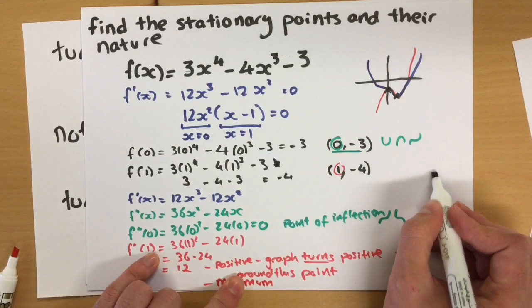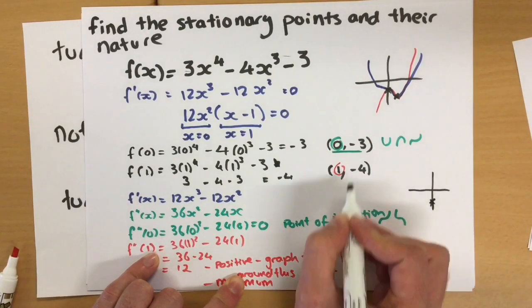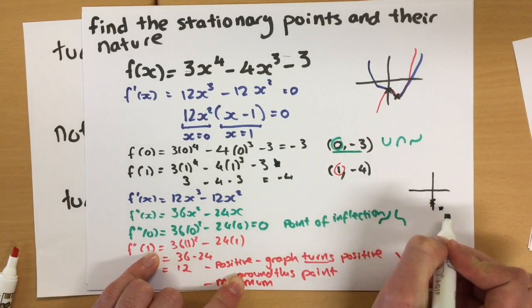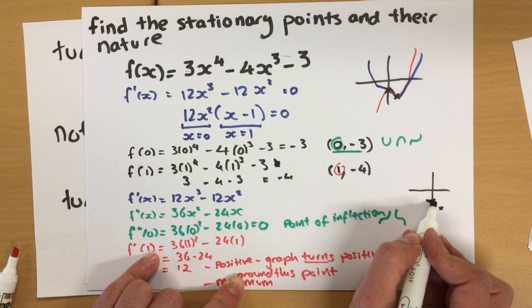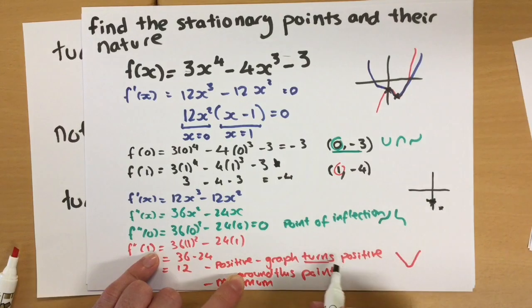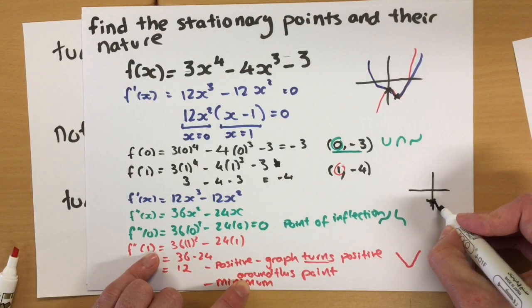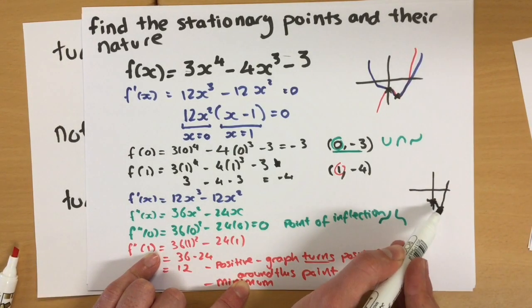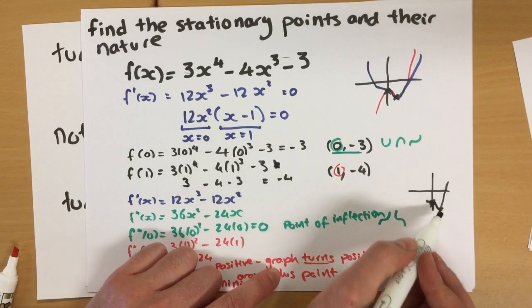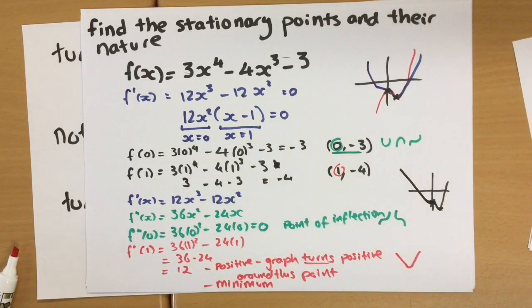So we can now sketch our little graph. We'll have coordinates of zero minus three and one minus four. We know zero minus three is a point of inflection. It's going straight. And then we are turning as a minimum at this point here. So we come down and up. Given this is a point of inflection, it's going to be the same either positive or negative gradient either side. It's sloping downwards, so it's sloping this way as well. So our graph looks just like that.